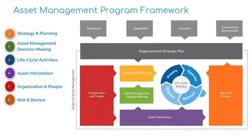This chart is straight out of ISO 55,000, which some of you may be familiar with, and it's really asset management at the highest level. Asset management is much greater than the analytics we provide — it deals with staffing information, customers, legislation, and working with investors. It's about developing an organizational strategic plan, but planning and prioritization has a huge role in the decisions you make as an organization. It boils down to: how can we keep our system as healthy as possible while delivering the acceptable level of service? We specialize in strategy and planning, asset management decision making, and asset information.